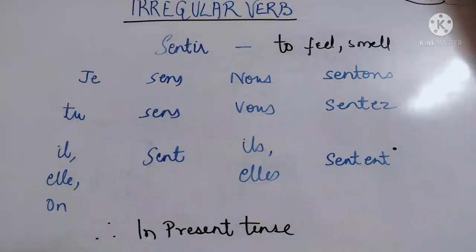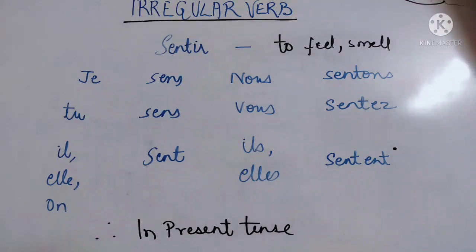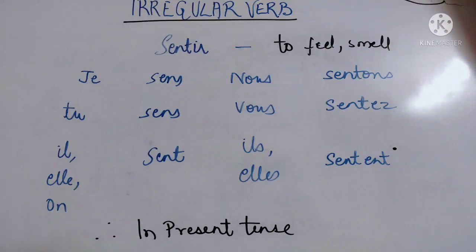This means: I feel, you feel, he/she feels, one feels, we feel, you feel, and they feel. For 'je', spelling is S-E-N-S. Same for 'tu' — S-E-N-S. For 'il' — S-E-N-T. 'Nous sentons' — S-E-N-T-O-N-S. 'Vous sentez' — S-E-N-T-E-Z. 'Ils sentent' — S-E-N-T-E-N-T.